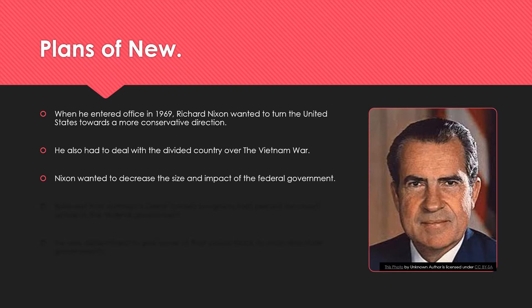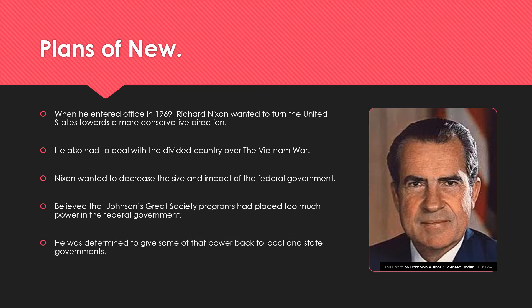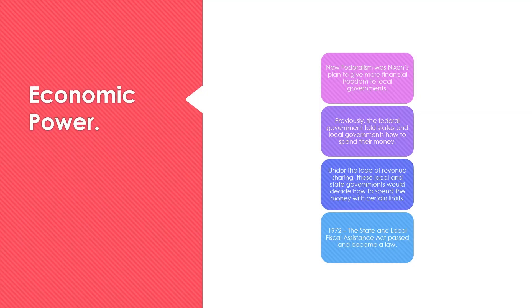Nixon also had to deal with the divided country over the Vietnam War. He had a goal to decrease the size and impact of the federal government. He believed that Johnson's Great Society programs had placed too much power in the federal government and he was determined to give some of that power back to local and state governments.